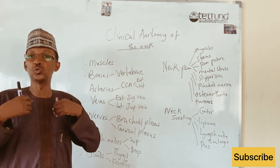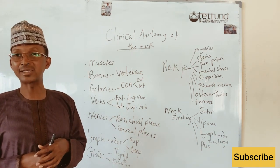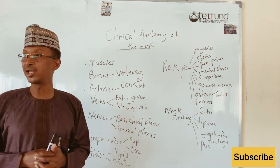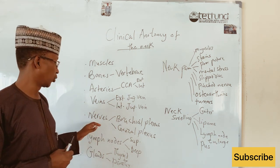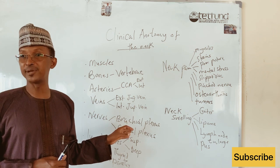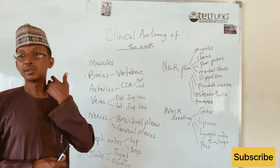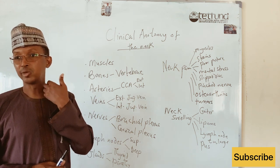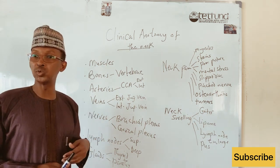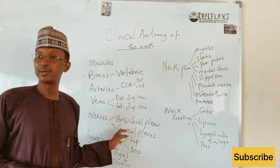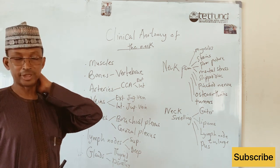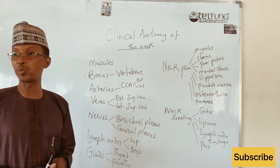These veins drain into the thorax before going into the heart. In the neck we have the external jugular vein and the internal jugular vein. We also have important nerves, including the brachial plexus from C5, C6, C7, C8 and T1, located at the root of the neck. These arise from the roots of the spinal nerves and travel into the upper limb. We also have the cervical plexus of nerves distributed along the back of the head and neck.